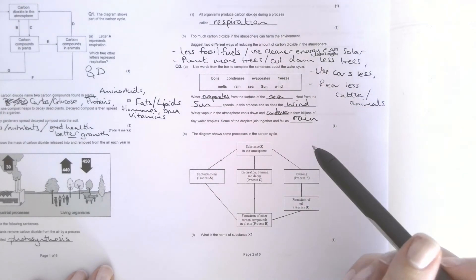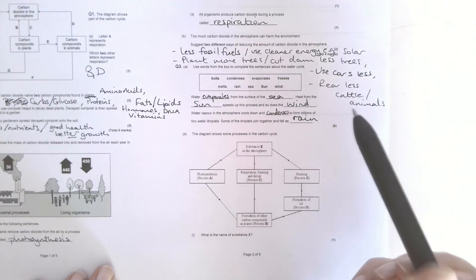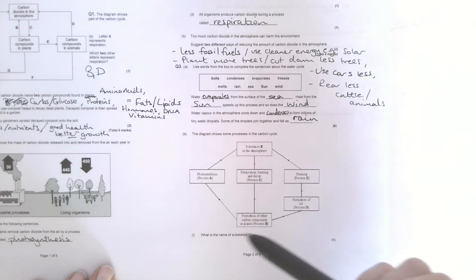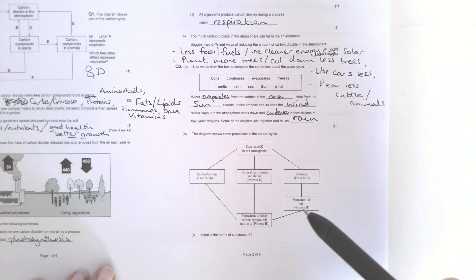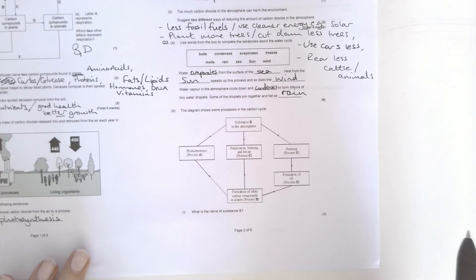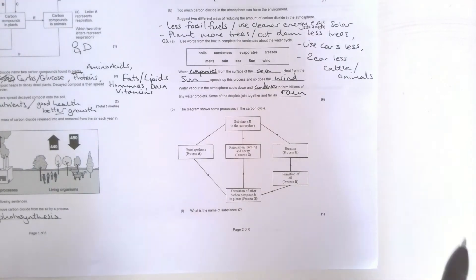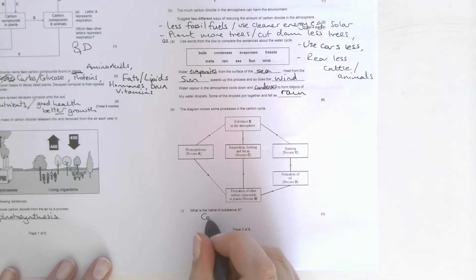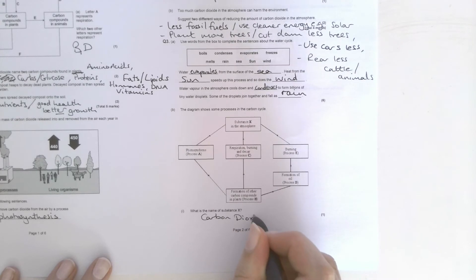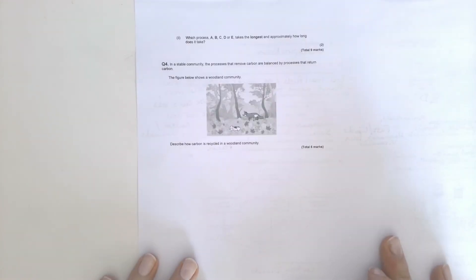Now apologies to some of you, for some reason I missed off this quick question in one of the documents. So if you had a, if you worked from the word document, this bit was missing. It's just an alternative carbon cycle diagram just to show you that there are some differences. And you're asked what is the name of substance X. The substance X is in the atmosphere, and that is carbon dioxide. Which process A, B, C, D, or E takes the longest and approximately how long does it take?